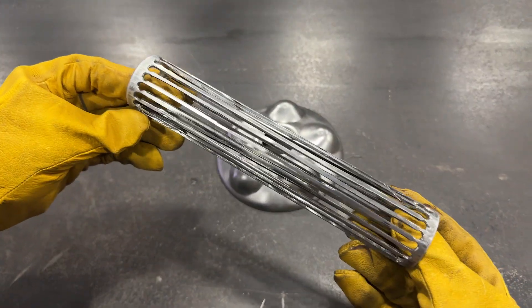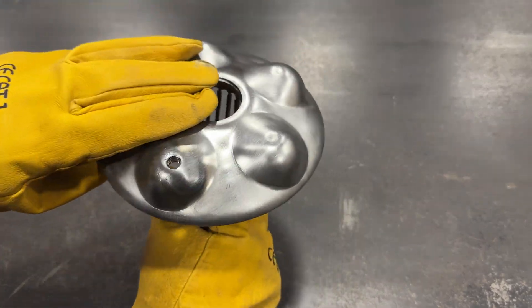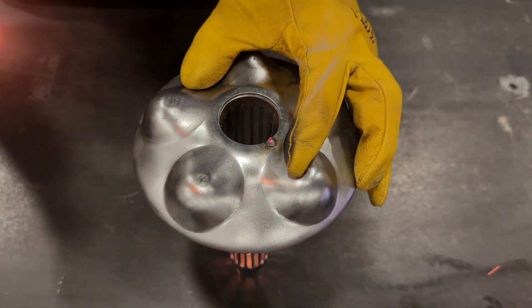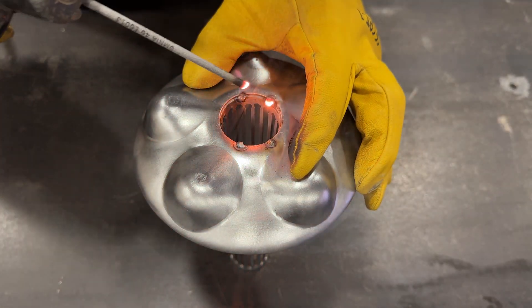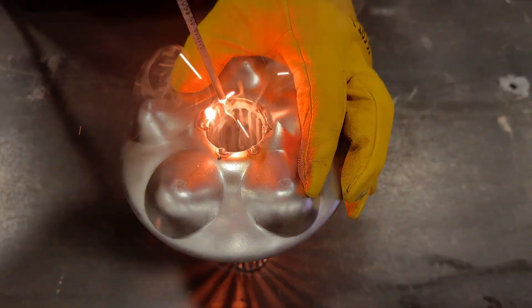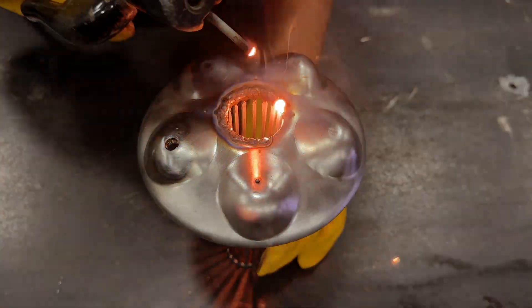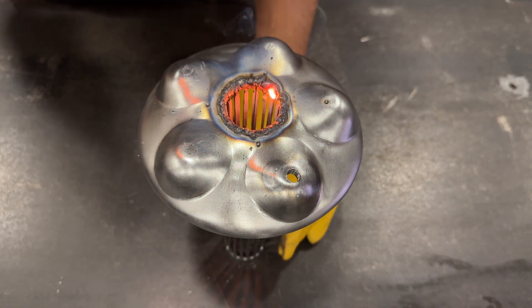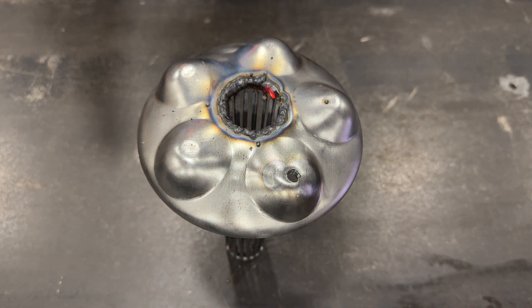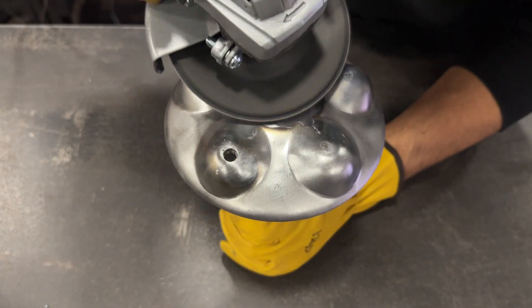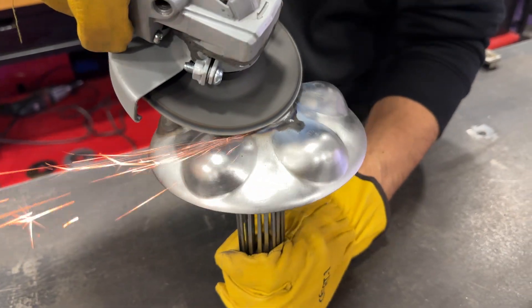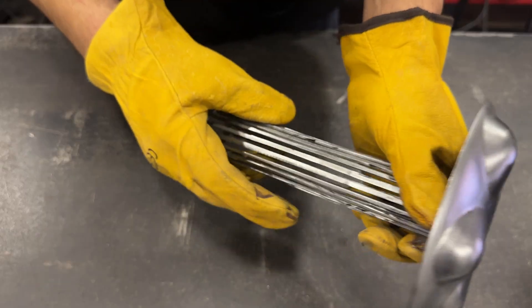It's time to weld these two pieces together. We'll place them like this, and we'll join them with a series of spot welds. As always, we smooth the surface. And we've got a perfect assembly.